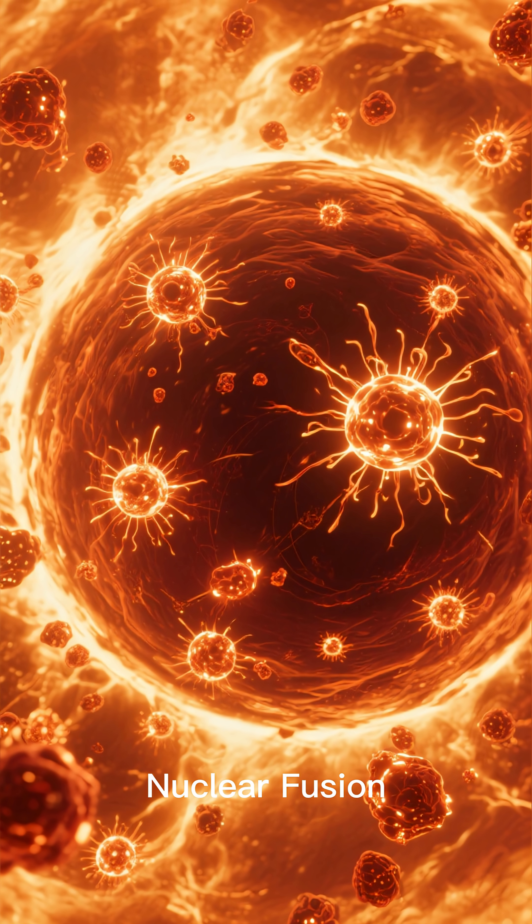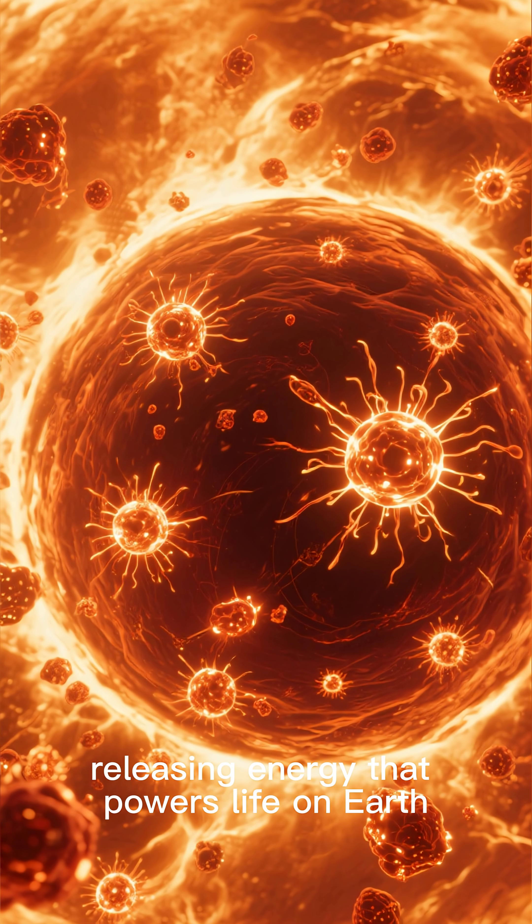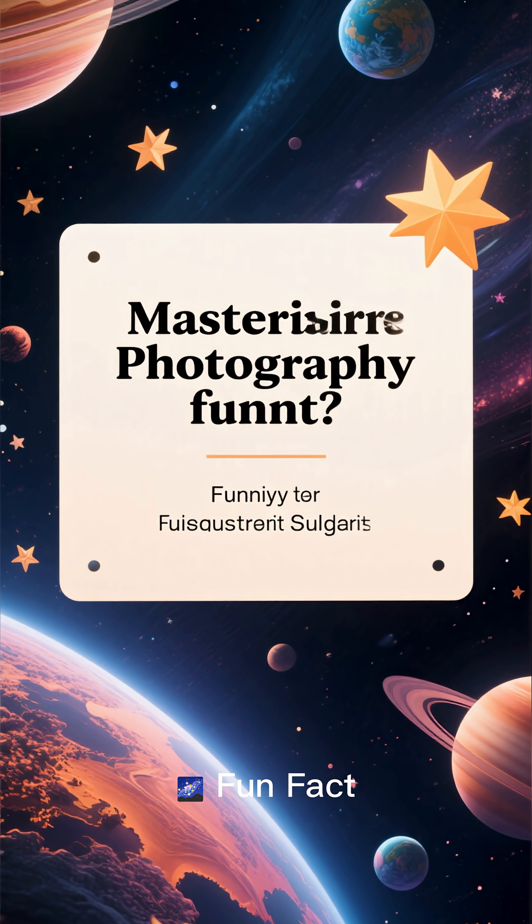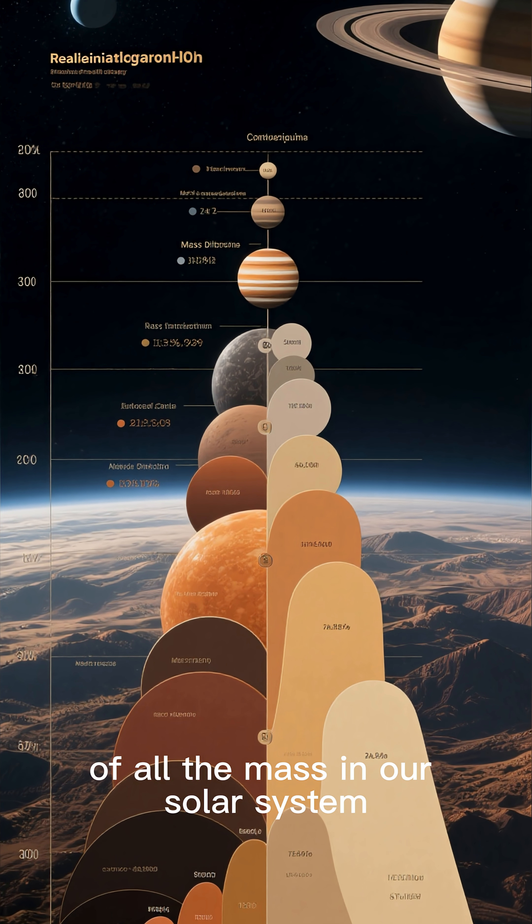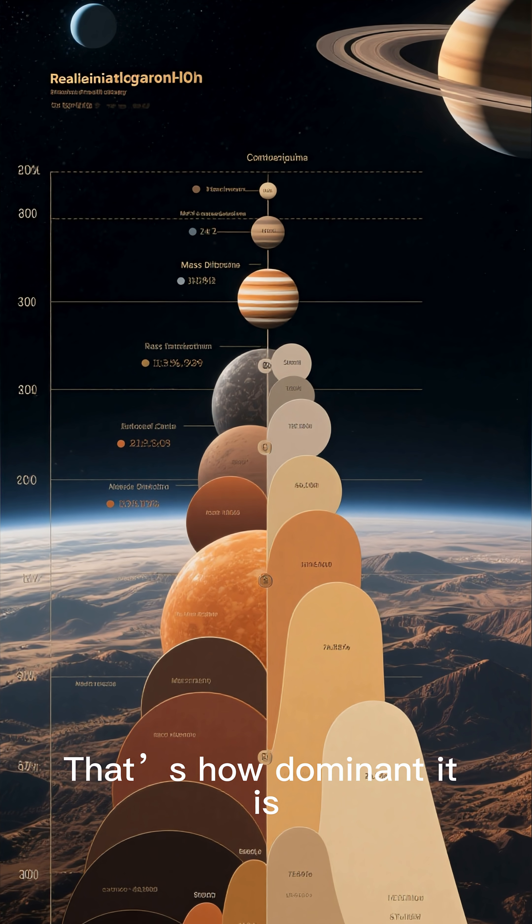Nuclear fusion: The sun fuses hydrogen into helium, releasing energy that powers life on Earth. Fun fact: the sun contains 99.8% of all the mass in our solar system. That's how dominant it is.